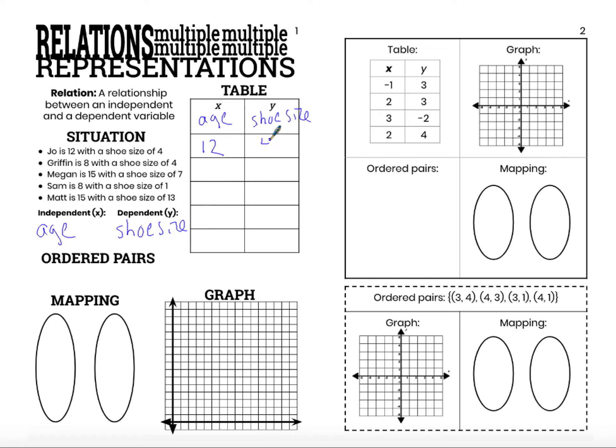So Joe is 12, X equals 12, with a shoe size of 4, Y equals 4. That row represents Joe. We have Griffin, the relationship between his age, 8, shoe size of 4. Different ages, same shoe size, that is just fine. This row represents Megan, her pairing of age of 15, shoe size of 7.